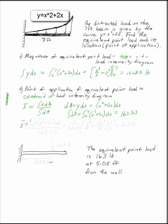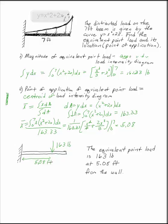So my centroid is the integral from 0 to 7 of x times x squared plus 2x dx divided by 163. That gives me x to the fourth over 4 plus 2x cubed over 3 from 0 to 7 divided by 163. That is 5.08. So I have on my beam 163 pounds at 5.08 feet away from the wall.